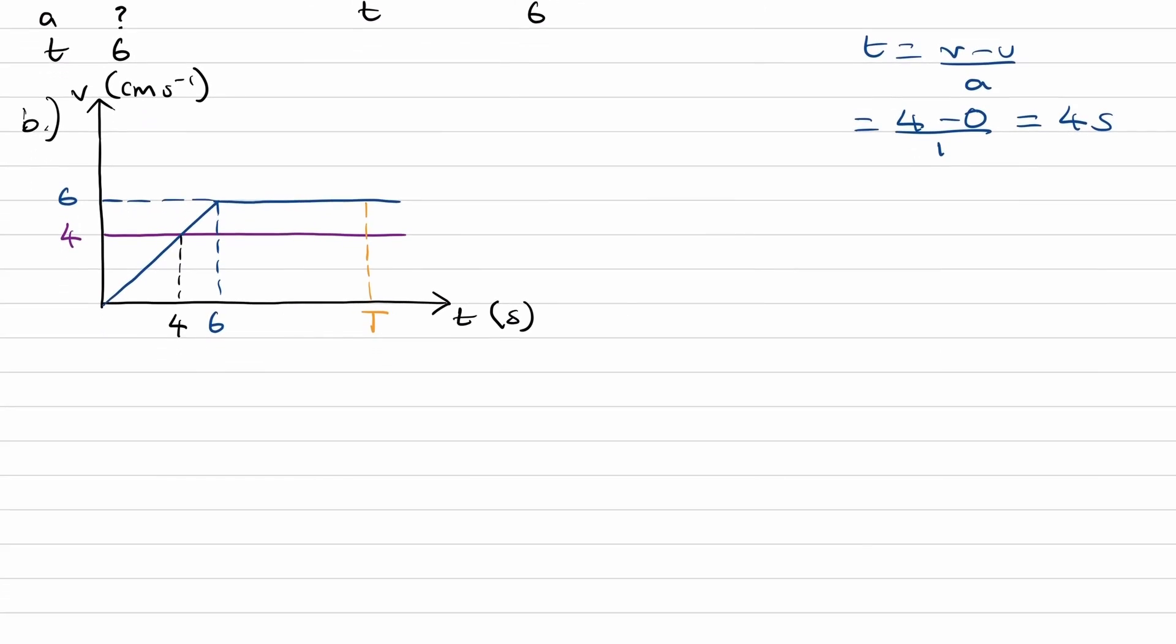All right, so let's start with the purple area. The purple area, so we know that this is a constant speed of four meters per second. Area of that would just be four times T. And then for the trapezium, we can split that up into a triangle plus a rectangle. The first part, the triangle, that would be half base times height. So half six times six.